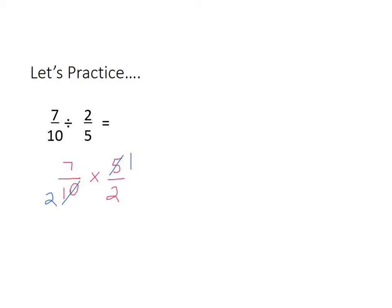Now there are no other numerators and denominators that have a common factor, so we're going to go ahead and multiply. 7 times 1 is 7, and 2 times 2 is 4. But if you look, the problem now is that it's improper. So we're going to need to come over here to our work area and take our numerator divided by our denominator. 7 divided by 4 is 1. Subtract new numerator and our denominator. So our final quotient is 1 and 3 fourths.